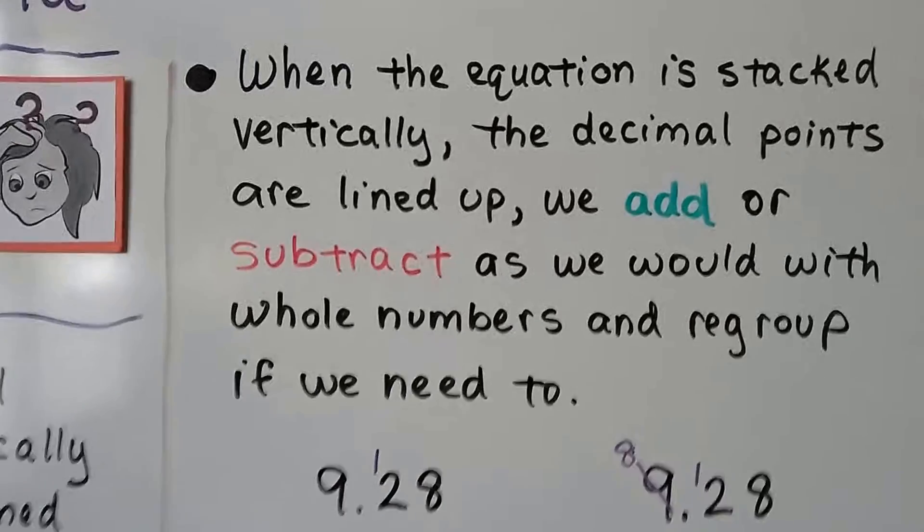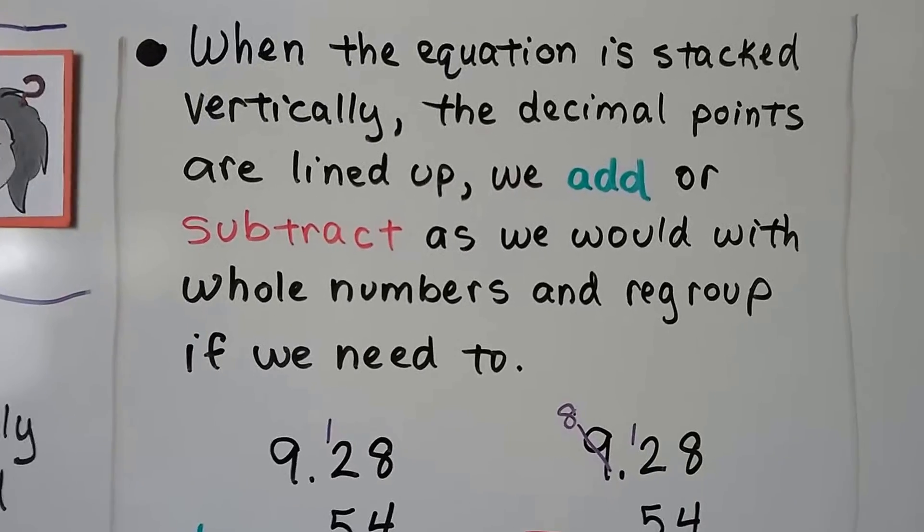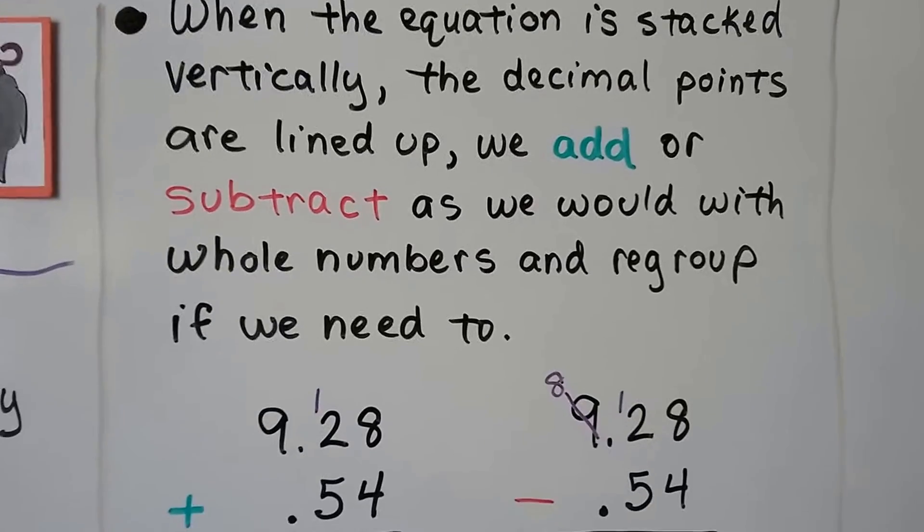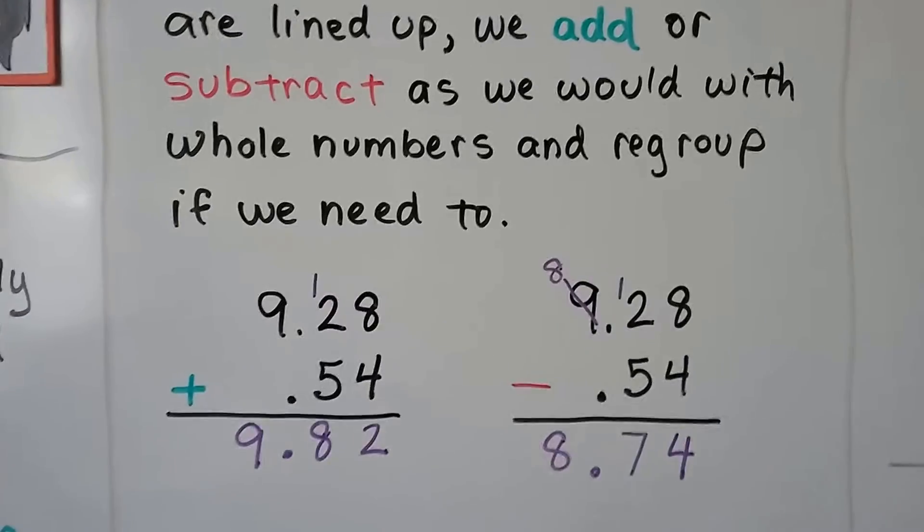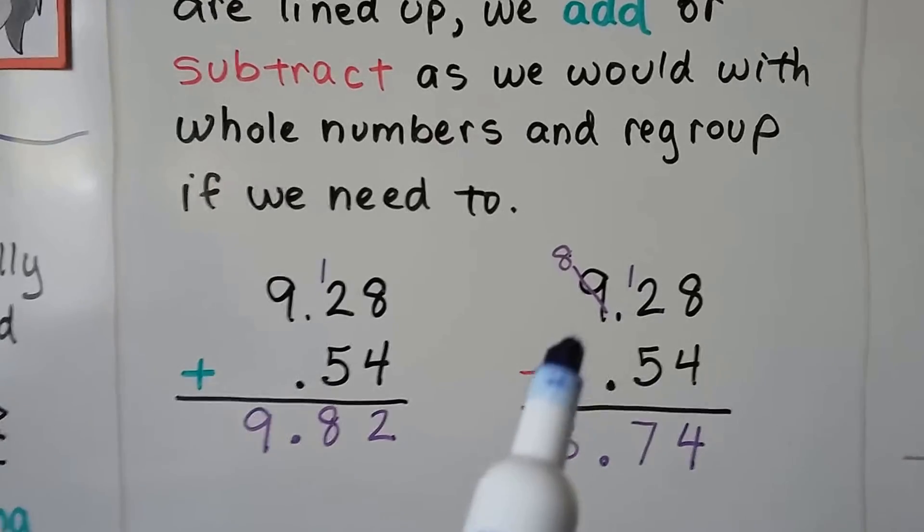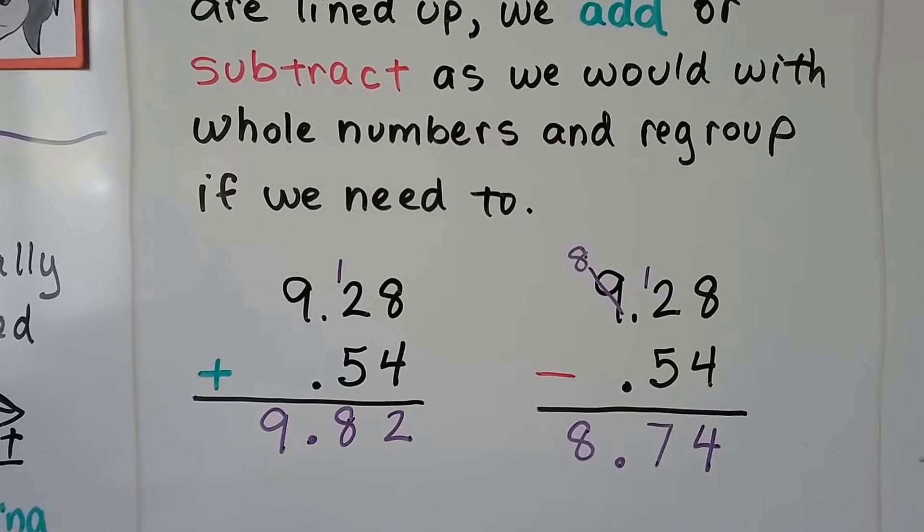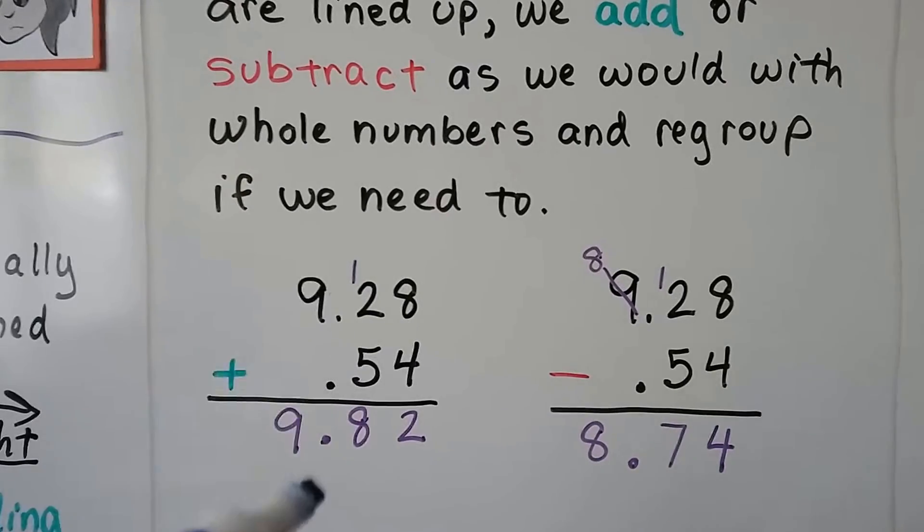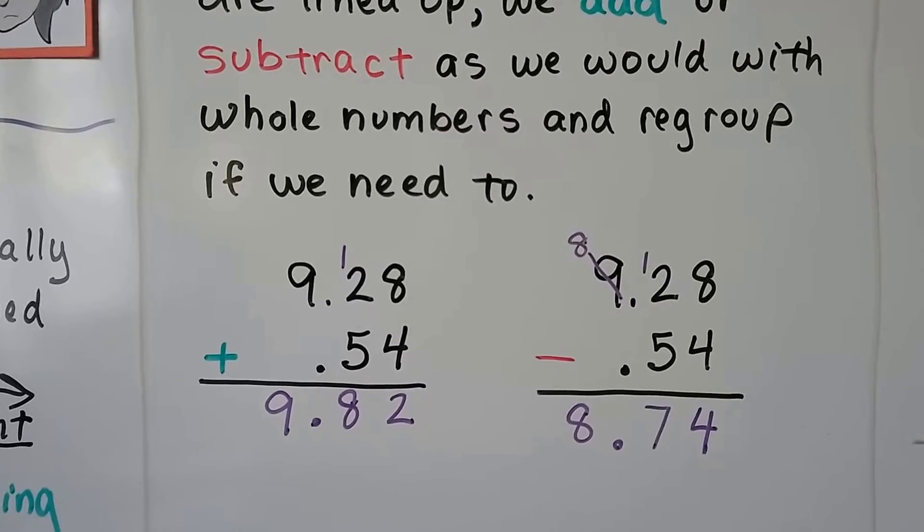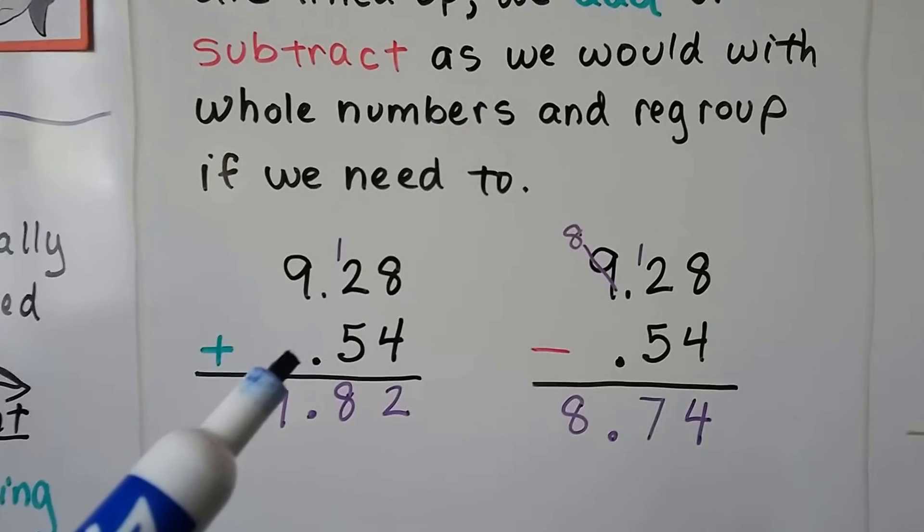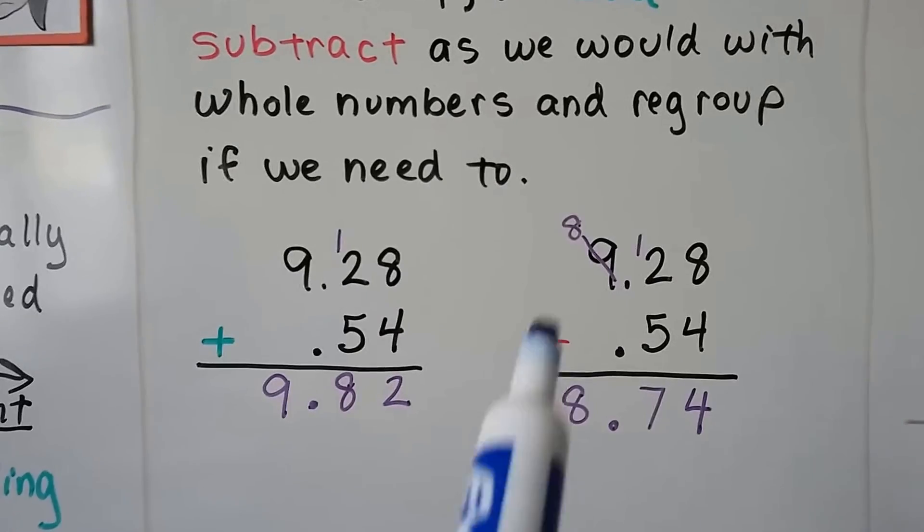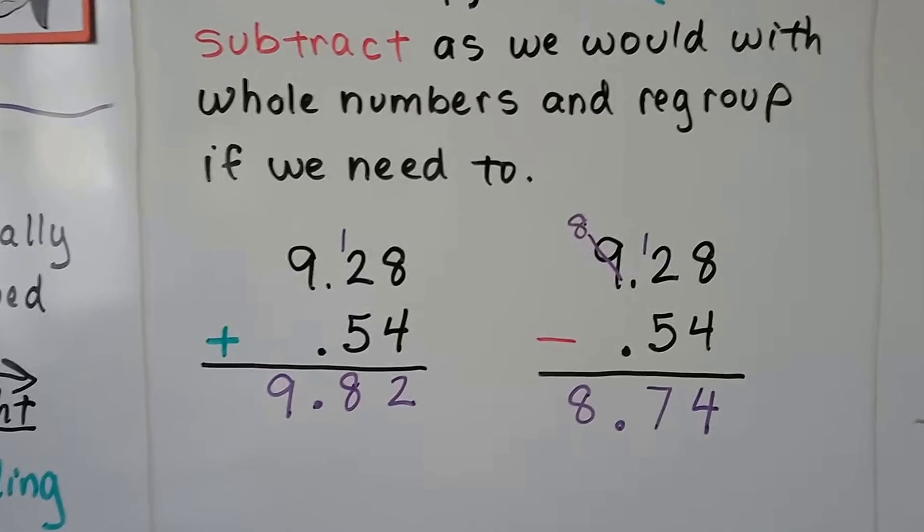When the equation is stacked vertically, the decimal points are lined up. We add or subtract as we would with whole numbers and regroup if we need to. So here we have 9.28 plus 0.54, and here we have 9.28 minus 0.54. When the decimal points are all lined up nice and it's got the right amount of digits, we just do it as if it was 928 plus 54 or 928 minus 54. We just have the decimal point lined up in the answer.